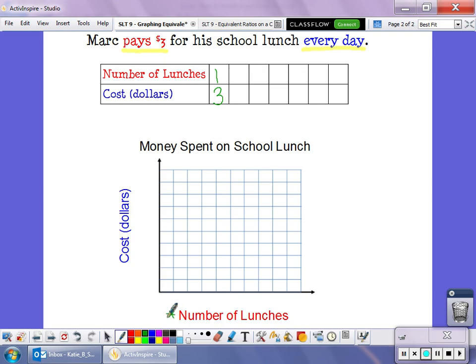These two numbers together create an ordered pair. The number of lunches is my first value. And the cost is my y value. So together, we can use these values to put a dot on our graph. Now again, I need some numbers. I need to know what this graph is counting by. So let's label this graph really quickly.